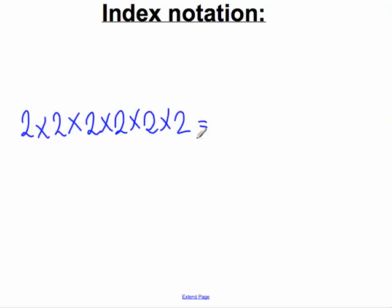Mathematicians have developed a shorter way of writing this long product or multiplication. They would ask themselves: how many times are we multiplying two by itself? One time, two times, three times, four times, five times, six times.